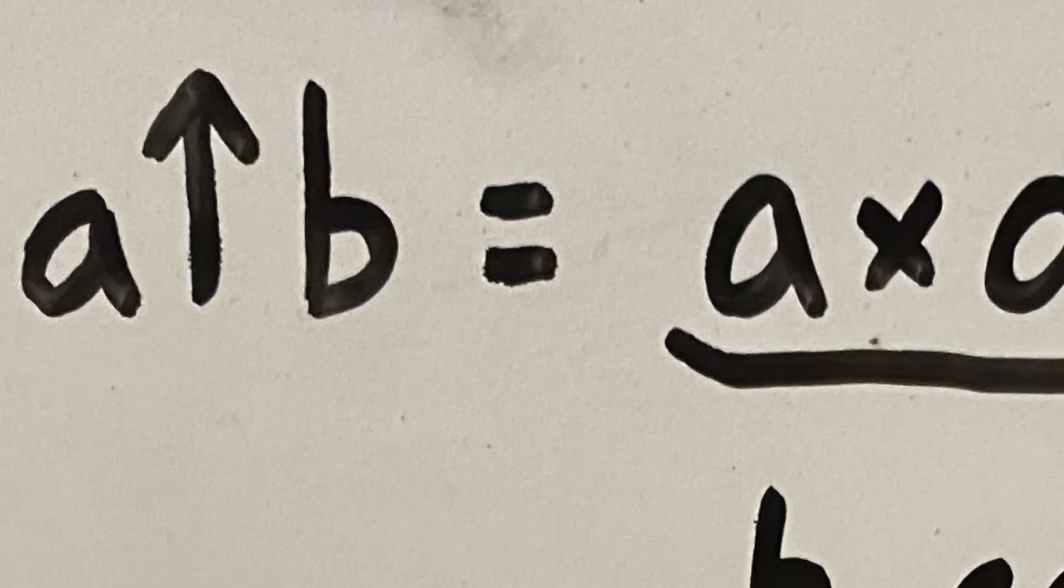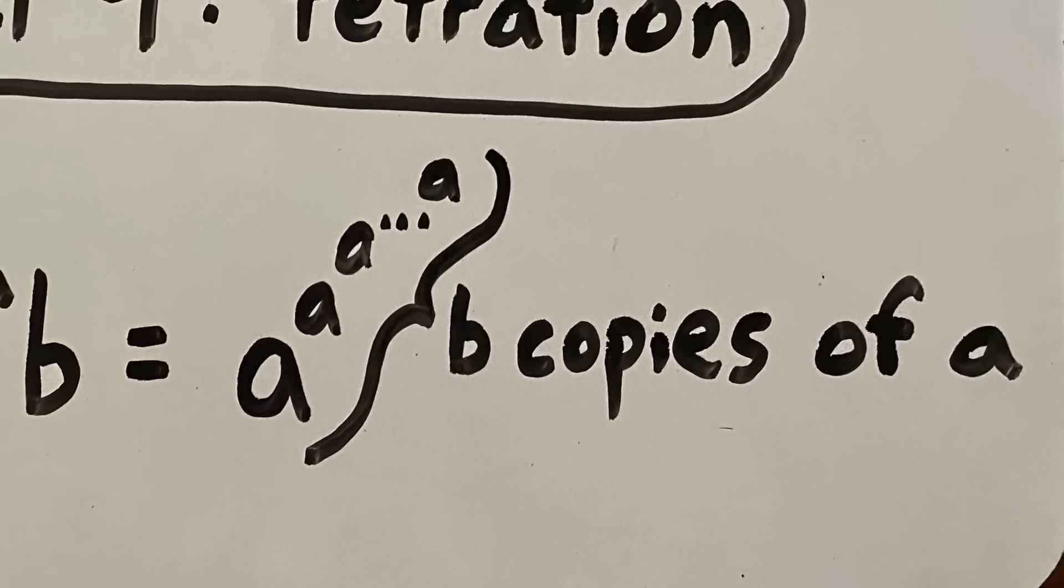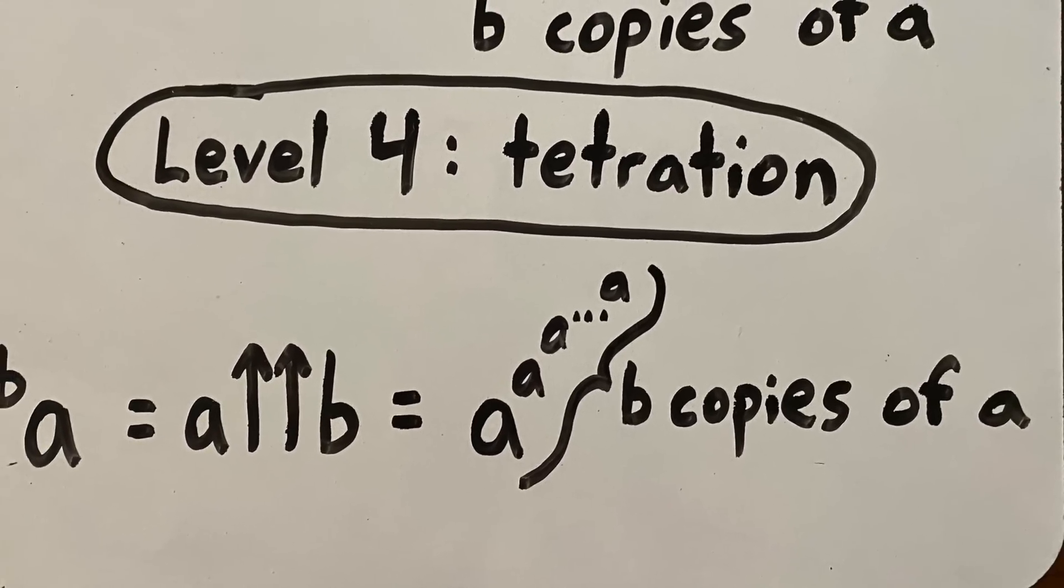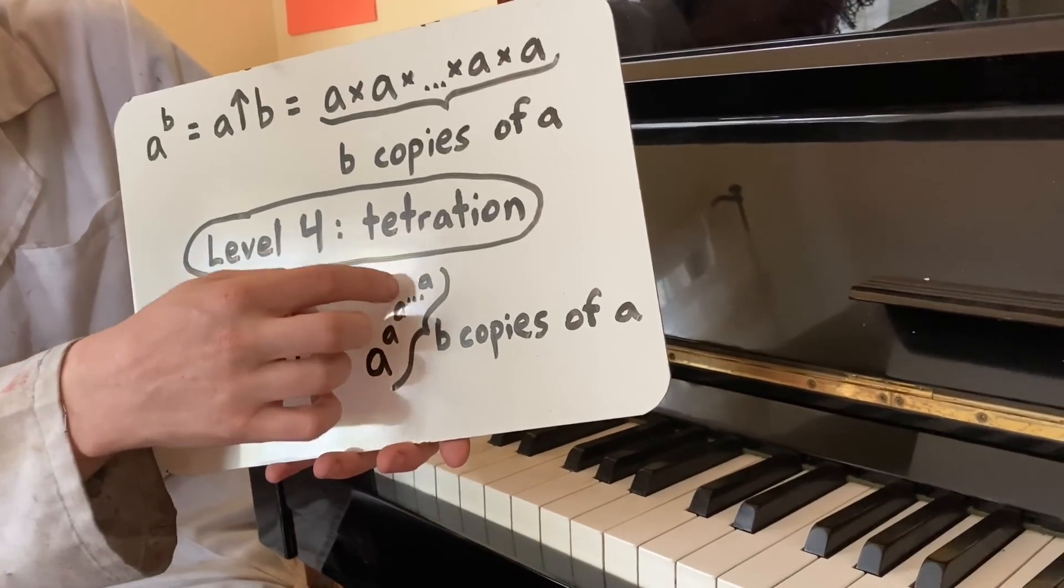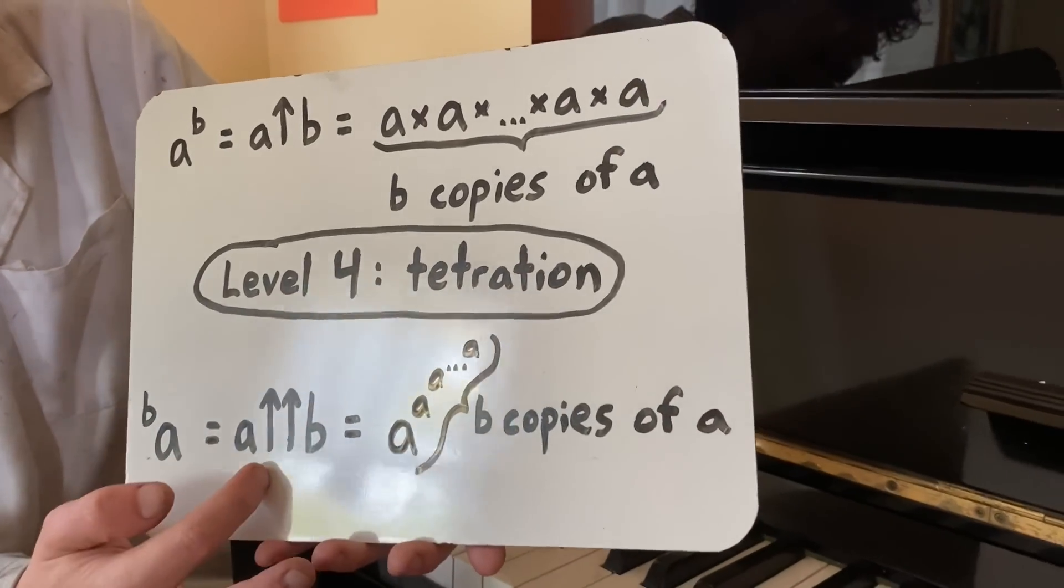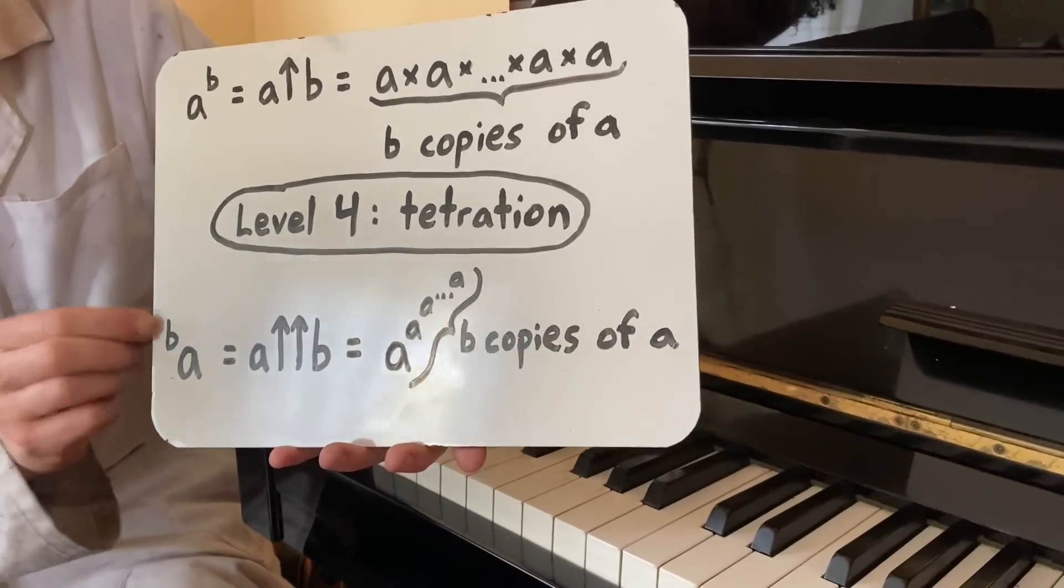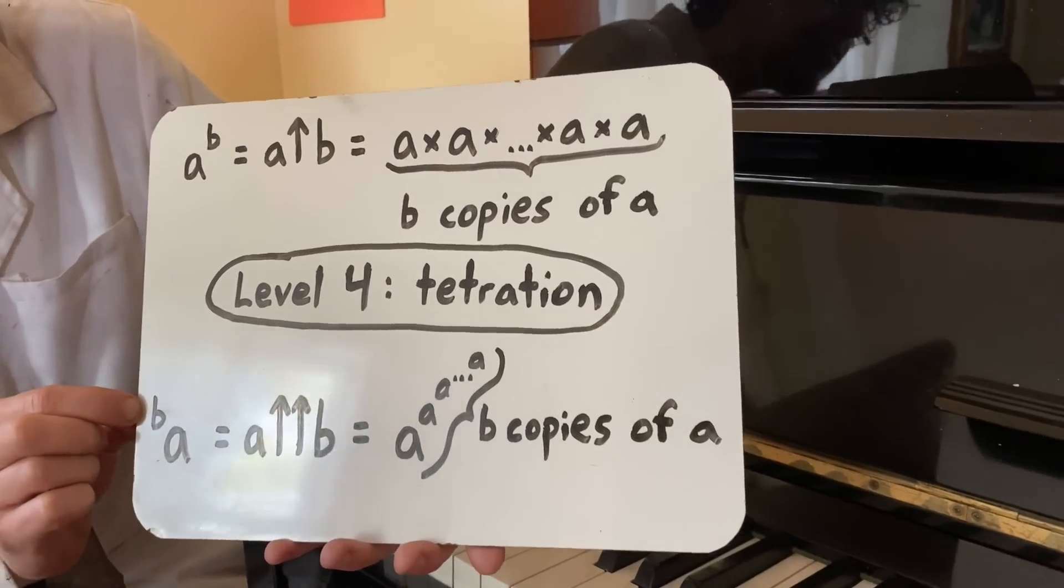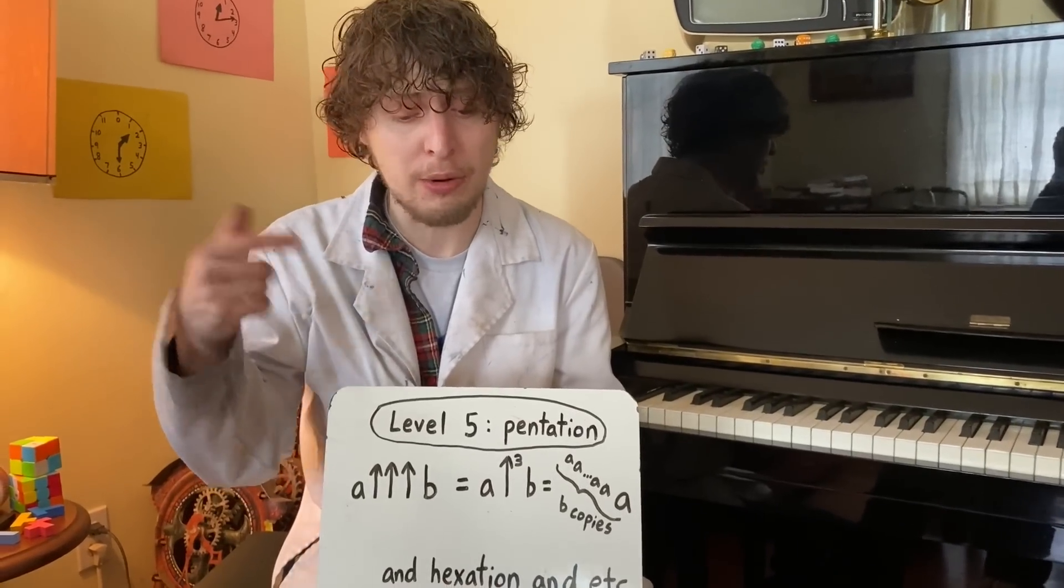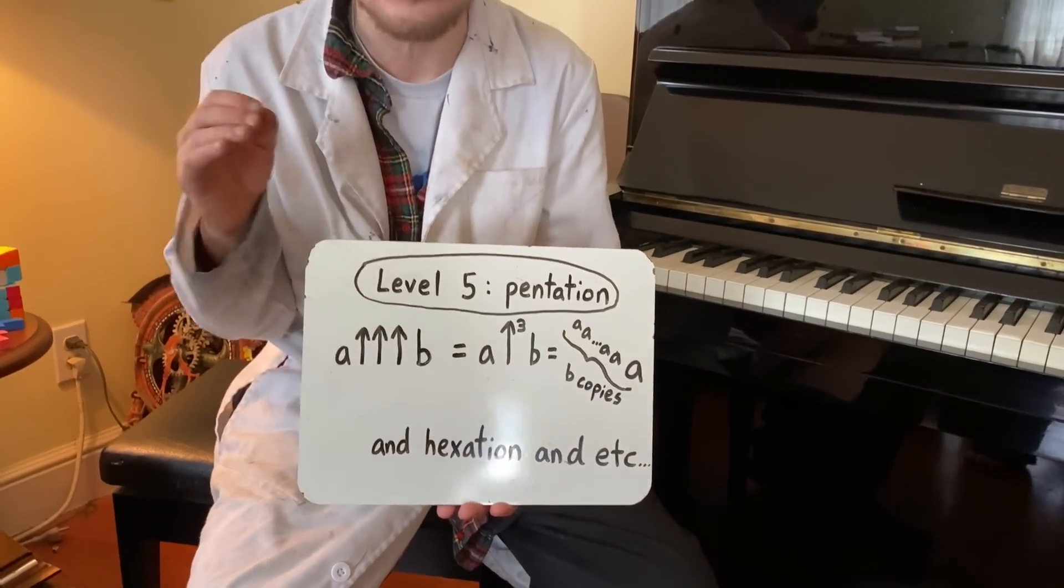Exponentiation meant b copies of a multiplied, so why not take b copies of a as exponents? That's exactly what tetration is: repeated exponentiation, making a tower of a to the a to the a to the a, b times. Some of the notations used to write this tetration can be using two upward arrows like how an exponent used one, or using an exponent on the front side instead of the back side. We could take this further and go to level five pentation where we repeat tetration b times, which can be written with three upward arrows or a little three next to the arrow or other ways. Like I said, there's unfortunately not really a standardized notation for these things.